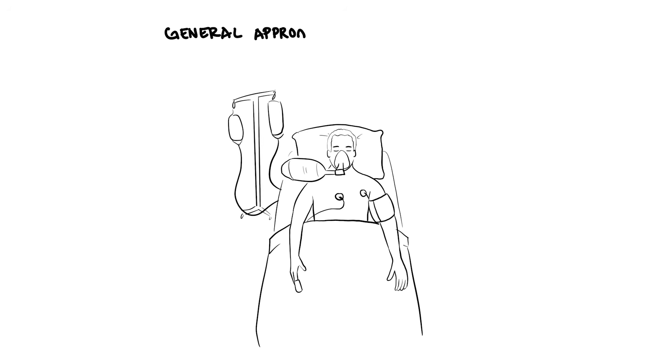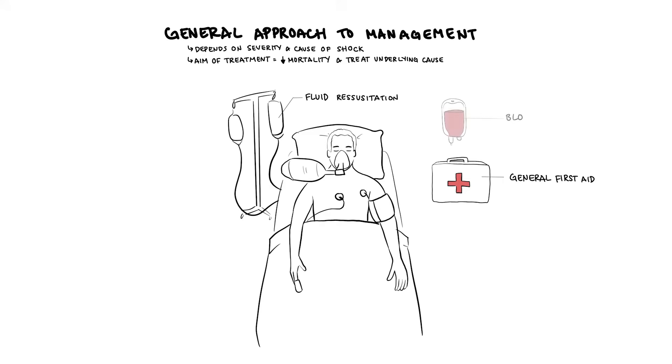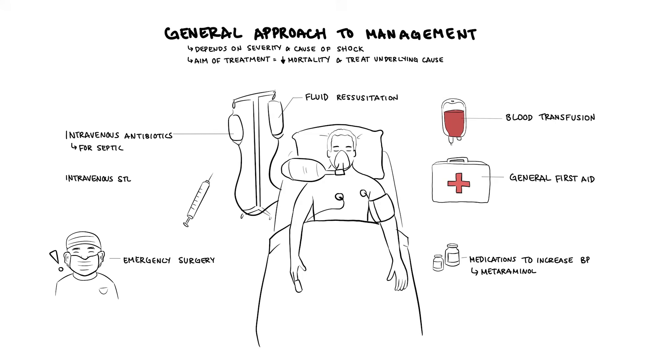The general approach to management really depends on the severity and cause of the shock. The aim of treatment is to reduce the mortality and treat the underlying cause. Performing first aid is very important. Fluid replacement due to the person being hypotensive. Blood transfusion if needed. Medications can be used to increase blood pressure such as metaraminol. Emergency surgery if indicated. Intravenous antibiotics if they are septic. Intravenous steroids and allergy medications if they are in anaphylactic shock.